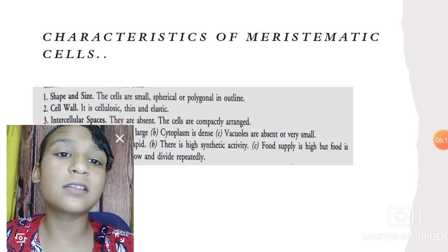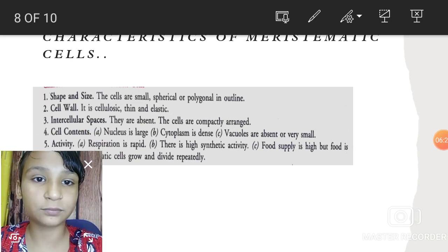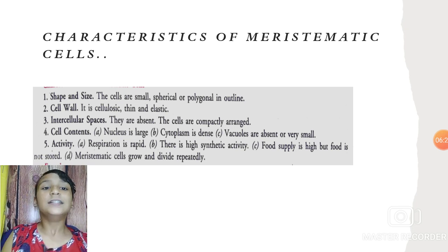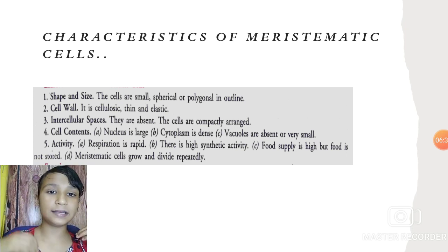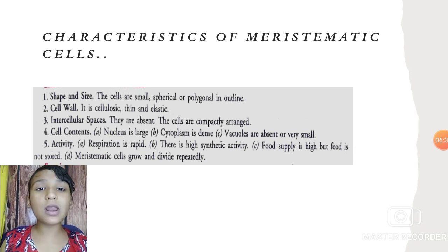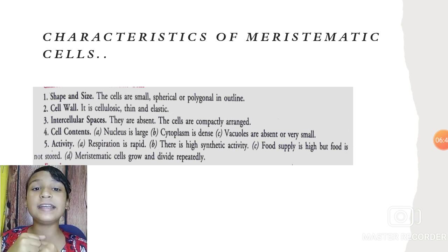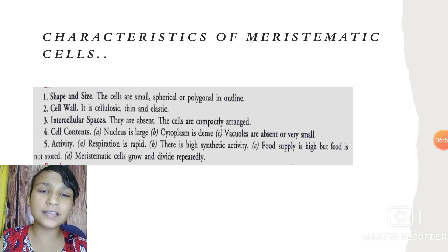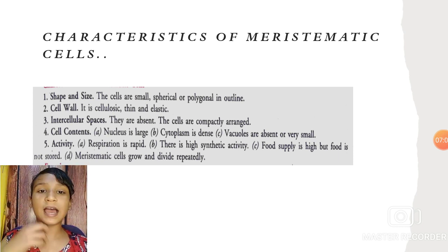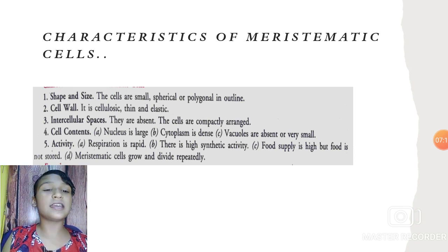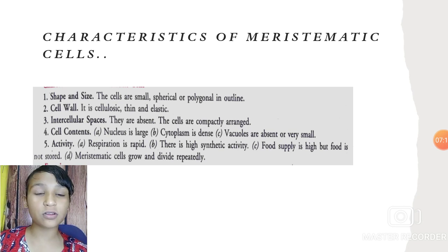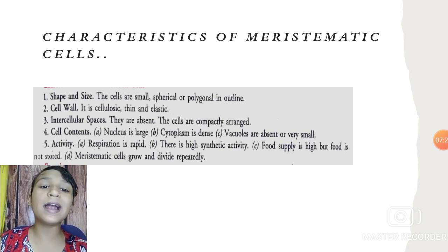Characteristics of meristematic cells: they are generally small in size and spherical or polyhedral in shape. Cell wall is thin and elastic. Intercellular spaces are generally absent — they are compactly and tightly packed. The nucleus is large with dense cytoplasm, and vacuoles are small. Respiration is rapid and there is high synthetic activity. Food supply is high but food is not stored. Meristematic cells grow and divide rapidly.